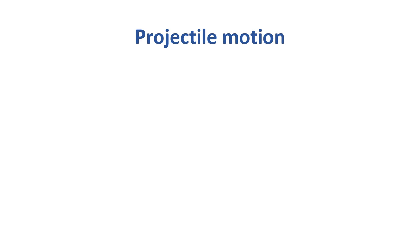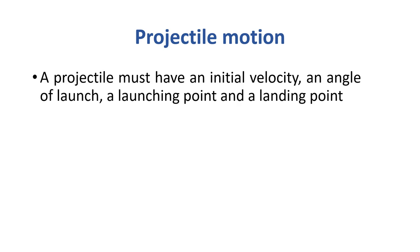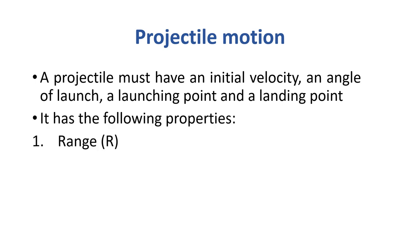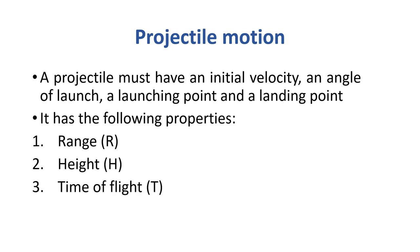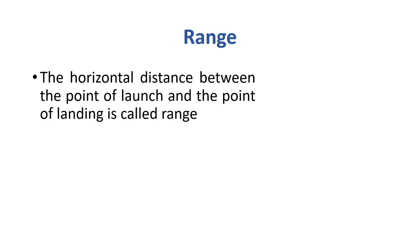Now we discuss projectile motion. The conditions for a projectile are: initial velocity, angle of launch (θ), launch point, and landing point. Its properties include range, height, and time of flight. Range is the horizontal distance between the point of launch and the point of landing.